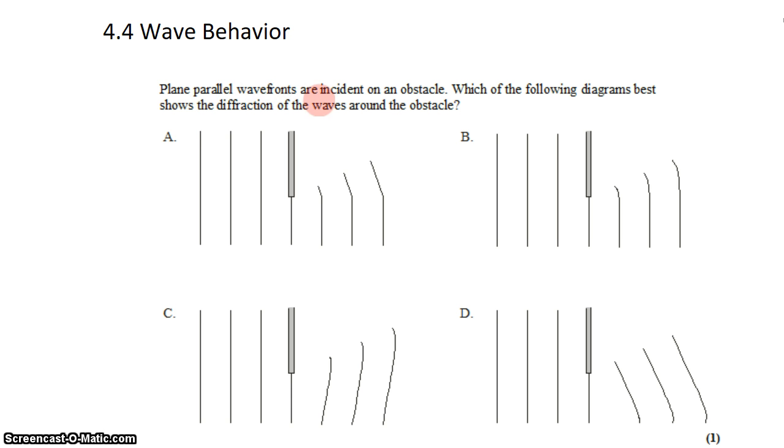We have parallel wave fronts incident on an obstacle. The obstacle is shown here in gray. Which one of the following diagrams best shows the diffraction of the waves around the obstacle?